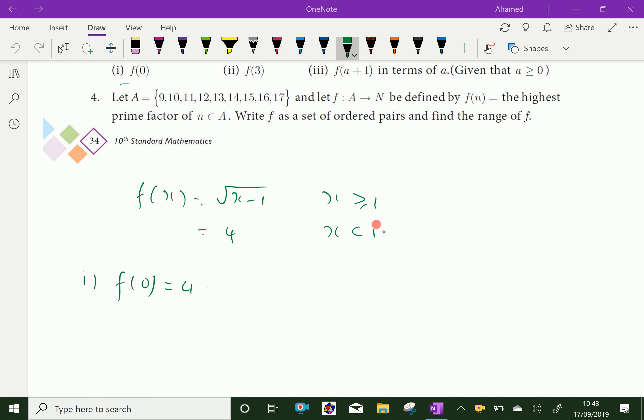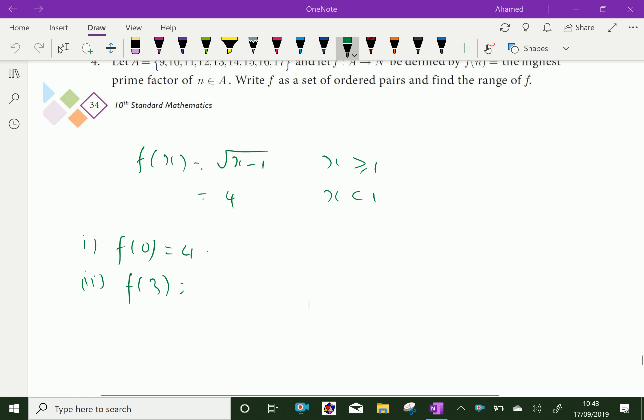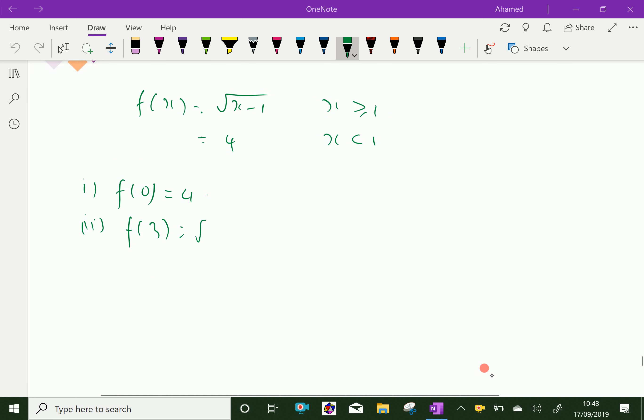Then second, f of 3. Here f of 3 falls in the x greater than 1 case, so f of x equals square root of x minus 1. That is square root of 3 minus 1, which equals square root of 2. So f of 3 equals plus or minus square root of 2.